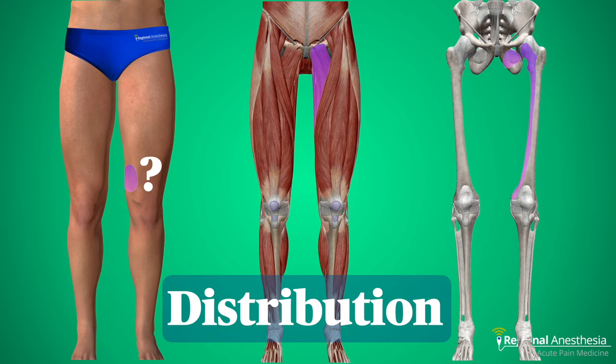As for myotomes, the obturator innervates the three adductor muscles, gracilis, and sometimes the pectineus muscle — essentially the medial compartment of the thigh. The obturator doesn't supply a lot of skin; if anything, it's a medial portion of the thigh just above the knee, but this seems to be completely absent in 50% of people, so it's not terribly relevant clinically.